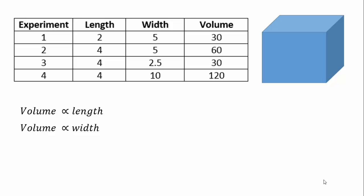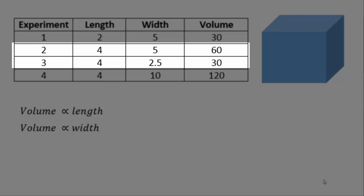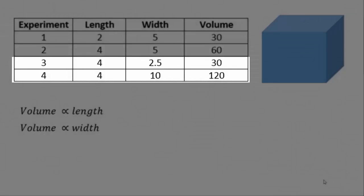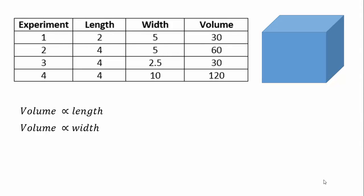Equally, the volume must be proportional to the width. In experiments 2 and 3, when the length is held constant but the width is halved, the volume halves. A similar relationship appears in experiments 3 and 4: the width is quadrupled and the volume is also quadrupled. If the volume is proportional to both length and width, then it must be proportional to the product of the length and the width. For instance, we know the volume doubles when the length doubles, and doubles when the width doubles — so if we double both, the volume is multiplied by 4.